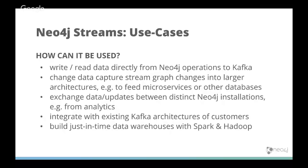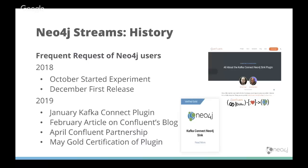You can use Neo4j Streams to exchange data between distinct Neo4j installations, to integrate your Neo4j installation within any existing architecture via Kafka, and for building a just-in-time data warehouse with Spark and Hadoop. The history: we started in October 2018 with experiments, made the first release in December, released the Kafka Connect plugin in January, published on the Confluent blog in April when Neo4j built a partnership with Confluent, and this month the Neo4j Kafka plugin sink received verified gold standard status.